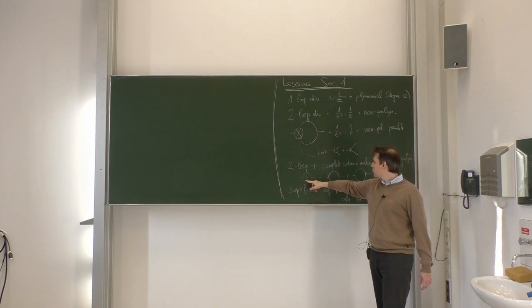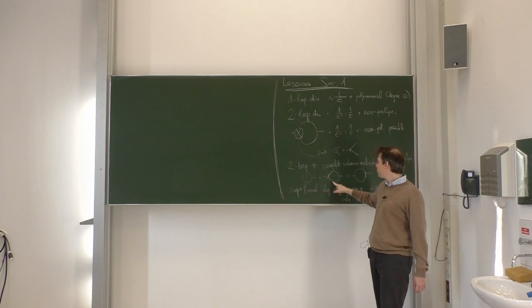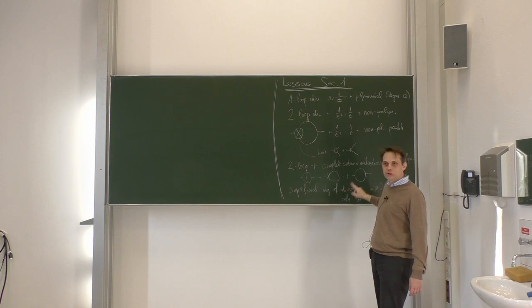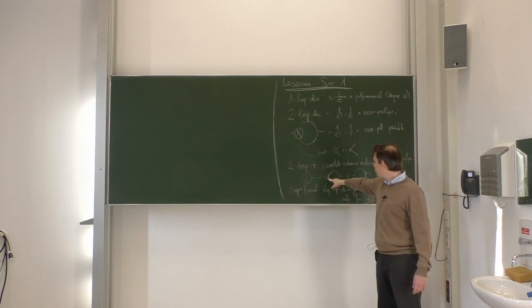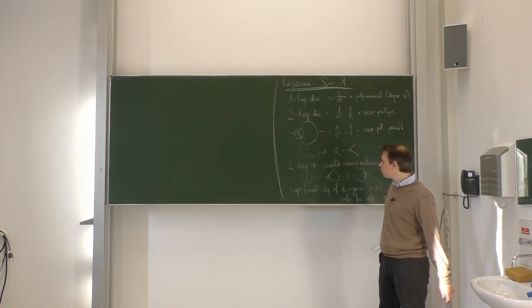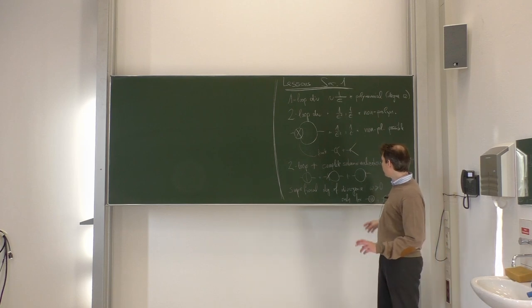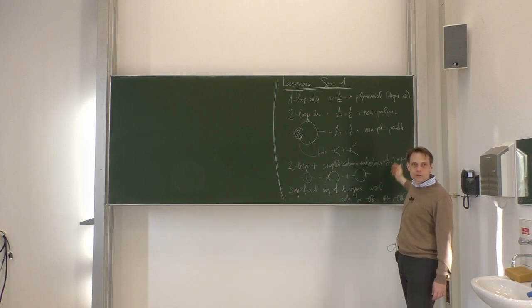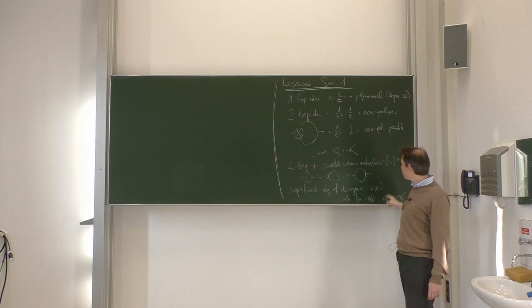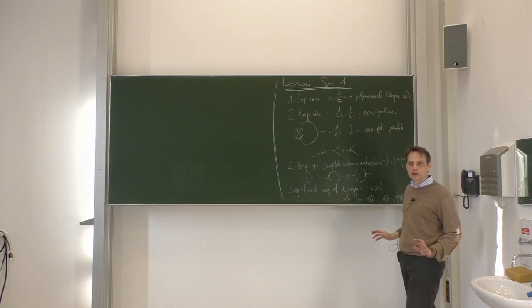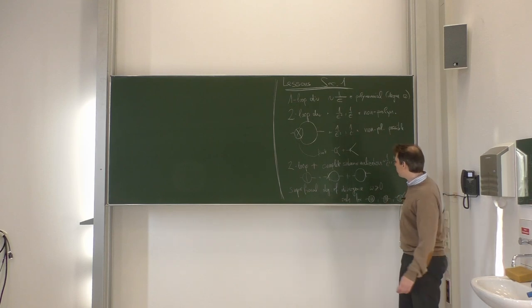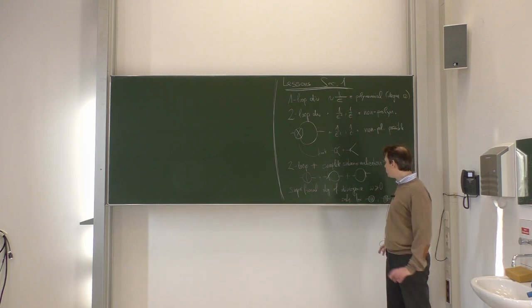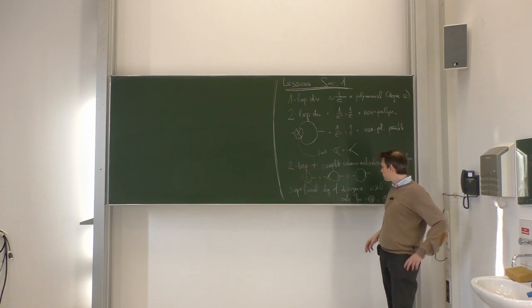The right structure to do renormalization is to do a two-loop calculation plus a complete subrenormalization, which means adding all one-loop counterterm Feynman diagrams with previously determined one-loop counterterm insertions. For example, this two-loop graph plus these two counterterm graphs, where these counterterms have been determined at the one-loop level. If we do that, we obtain 1/ε² and 1/ε poles, but the coefficients are polynomial again in the momenta and masses.